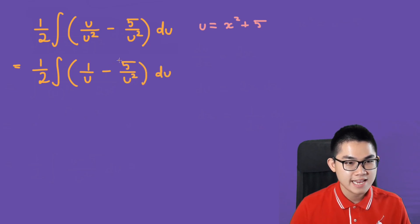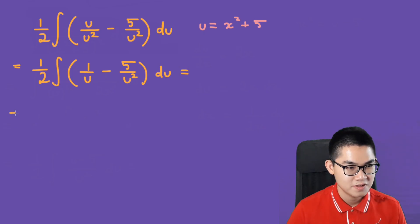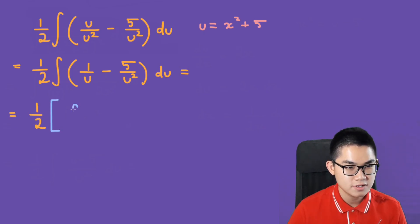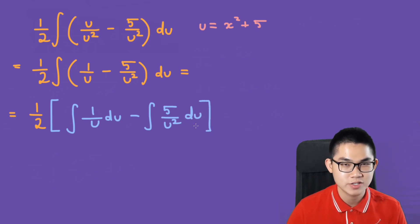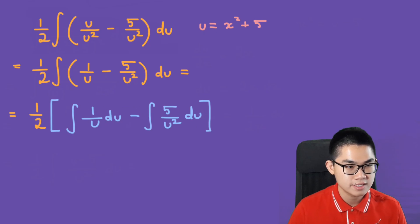Then we split this integral apart. We get 1 over 2 times the integral of 1 over u du minus the integral of 5 over u squared du. You can also bring the 5 out in front.